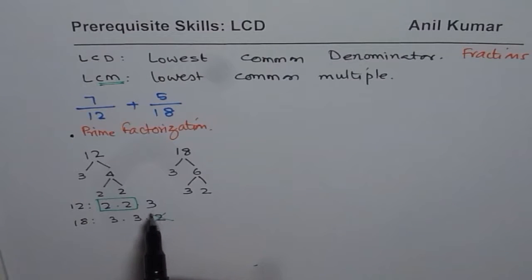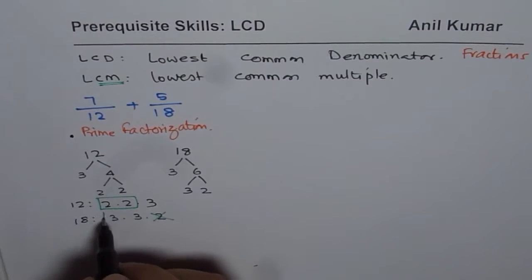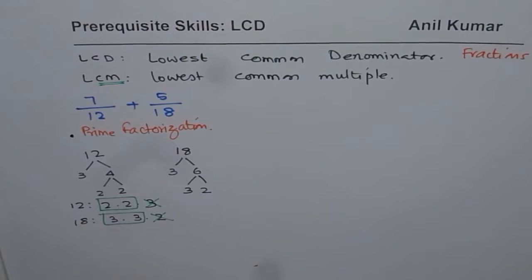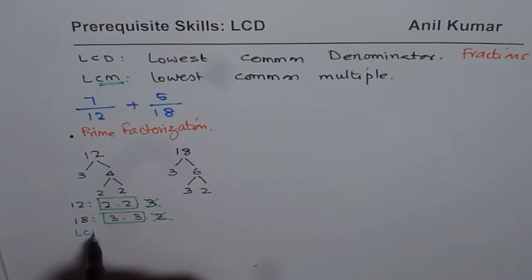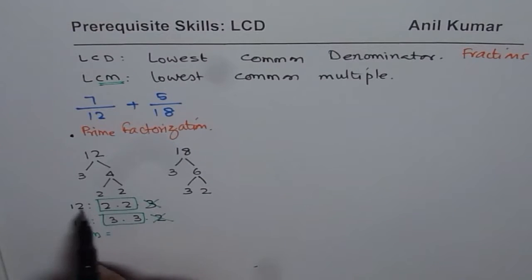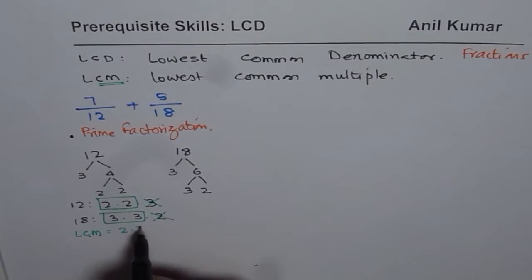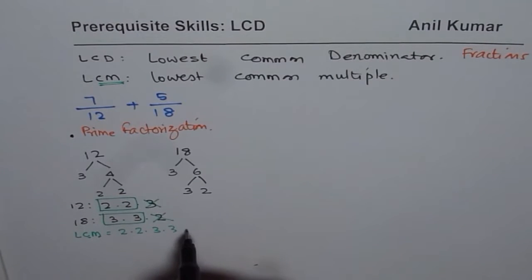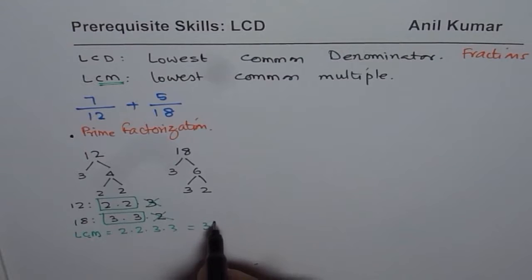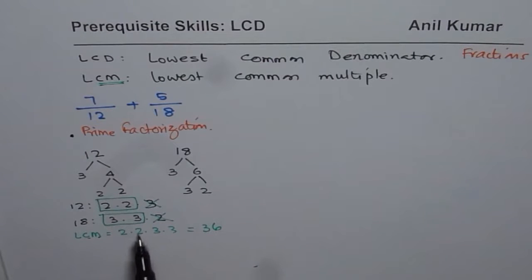The other factor is 3. Where do we see more of 3? We see more 3's for 18, so consider those and disregard 12's. Once done, we have the lowest common multiple: take more of 2 from 12, more of 3 from 18, and disregard the rest. Multiplying gives us 2 times 2 times 3 times 3. That is 4 times 9, which equals 36.